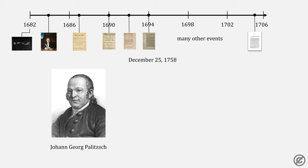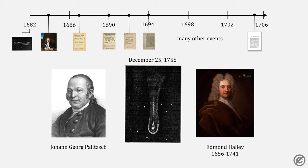On Christmas 1758, Johann Georg Paulicht spotted Halley's Comet, or what we now refer to as Halley's Comet. If Halley had lived to see it, he would have been well over a hundred years old.